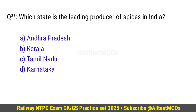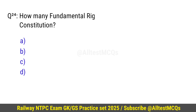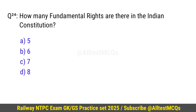Question number 23: Which state is the leading producer of spices in India? Right option is B — Kerala. Question number 24: How many Fundamental Rights are there in the Indian constitution? Right option is B — Six.